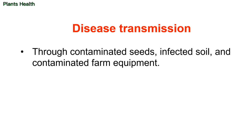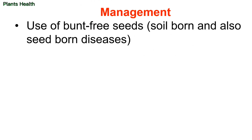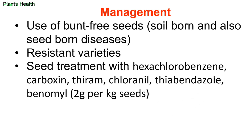Disease transmission: these pathogens are transmitted through contaminated seed, infected soils, and farm equipment. For management, use of bunt-free seed is recommended. We should also grow resistant varieties and treat seeds with hexachlorobenzene, carboxin, thiram, chloroneb, thiabendazole, and benomyl at 2 grams per kilogram of seed.